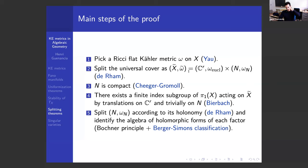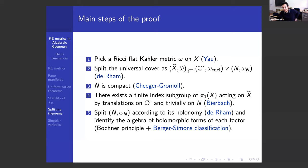For the proof, the first step is to use the Yau theorem: since X is Calabi-Yau you get a canonical Ricci-flat metric. That's the entry point — once you have your canonical metric you can analyze the geometry of X using metric methods and differential geometry. The first step applies the de Rham theorem: X is compact, hence complete, but has no reason to be simply connected, so I pass to the universal cover X-tilde. X-tilde is simply connected and Ricci-flat complete, so I can apply the de Rham theorem, extract the Euclidean part, and write X-tilde as a product of Euclidean space times another Ricci-flat manifold N, which turns out to be Kähler as well.